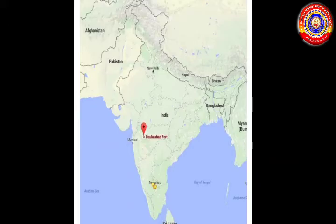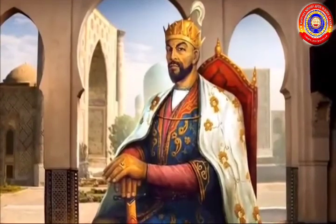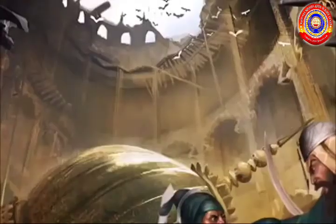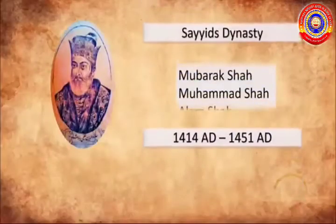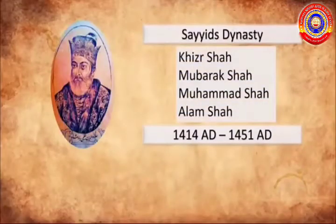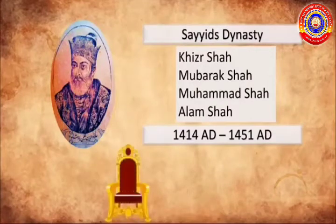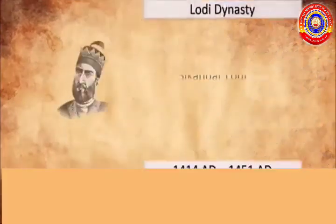However, he was not able to resist the Mongol ruler Timur. Timur invaded Delhi recklessly and plundered it, and appointed Khizr Khan to rule Punjab. Khizr Khan was the founder of the Sayyid dynasty. The Sayyid dynasty was succeeded by the Lodi dynasty.